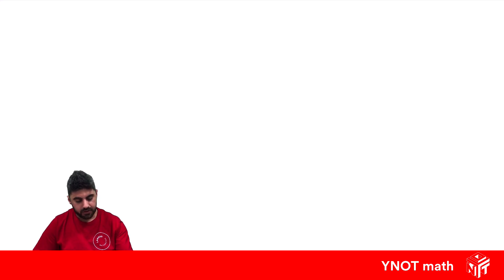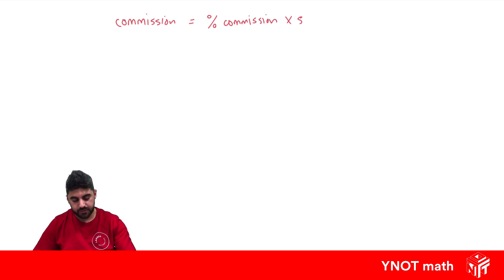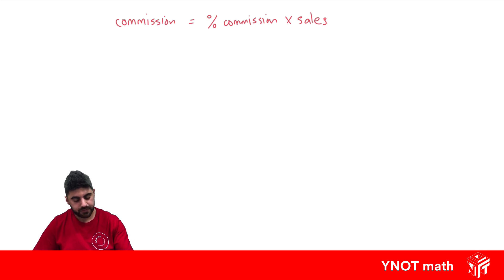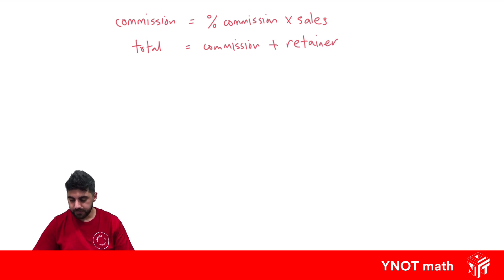To work out your commission, it's just going to be the percentage of the commission agreed upon by your employer multiplied by your sales. Your total earnings will be the commission plus any retainer that you might earn, which is the guaranteed income that you might make.